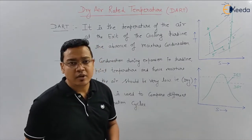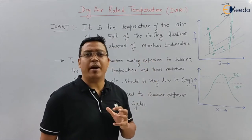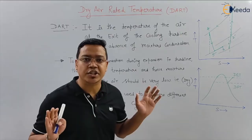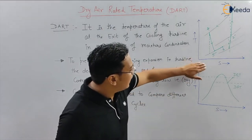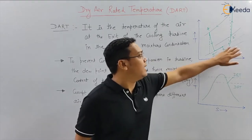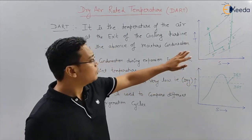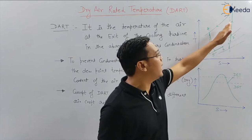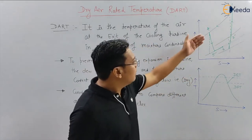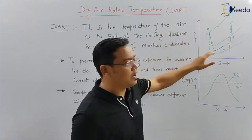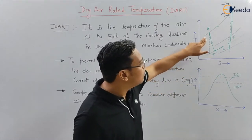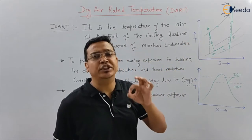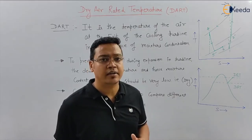That means at the exit of the turbine there should not be any moisture content or condensation. Let's see the T-S diagram — I have explained these types of diagrams in previous videos. We will concentrate on the process 4 to 5-dash, which is the actual expansion process occurring in the cooling turbine.